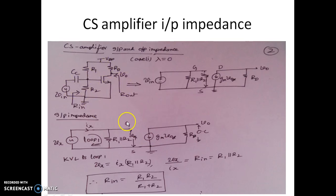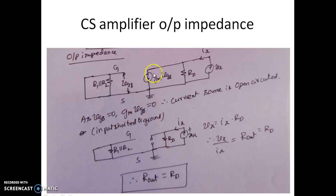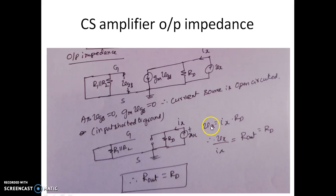This is how we find the input impedance of the CS amplifier. To find the output impedance, we connect a dummy source at the output and short circuit the input. Since the input is shorted, Vgs becomes zero, and therefore Gm·Vgs, the current source, also becomes zero — represented by an open circuit. Writing KVL: Vx equals Ix·Rd, so Vx/Ix equals Rd. Therefore, the output impedance of the CS amplifier with lambda equal to zero is Rd.